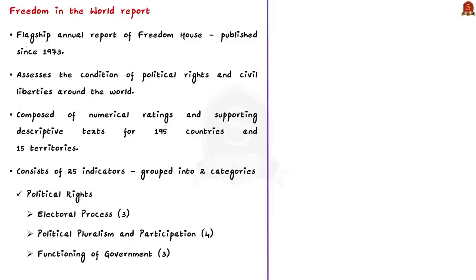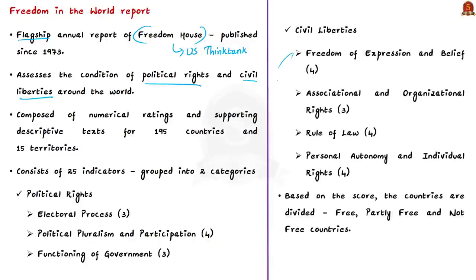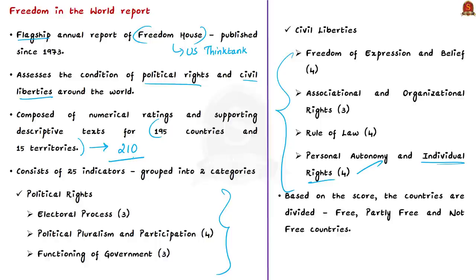Freedom in the World is a flagship annual report of Freedom House, a US think tank. This report has been published since 1973 and assesses the condition of political rights and civil liberties around the world. For each country and territory it analyzes the electoral process, political pluralism and participation, functioning of government, freedom of expression and belief, associational and organizational rights, rule of law, and personal autonomy and individual rights — covering 195 countries and 15 territories, totaling 210.